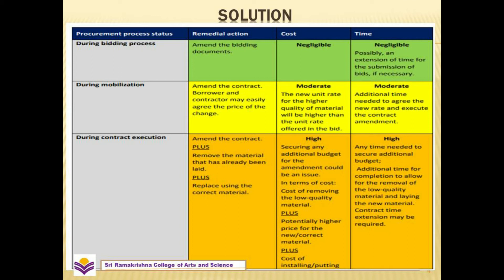The third stage of the procurement process: if we found any defect during the contract execution period, we would need to amend the contract, remove the material that has already been laid, and replace it using the correct material. Obviously, the cost and time would be higher. Securing any additional budget for the amendment would be an issue, as would the cost of removing low quality material and adding new quality product.